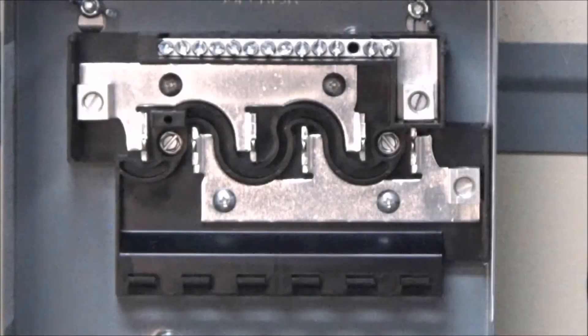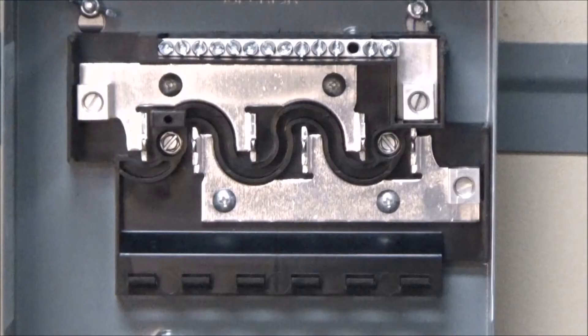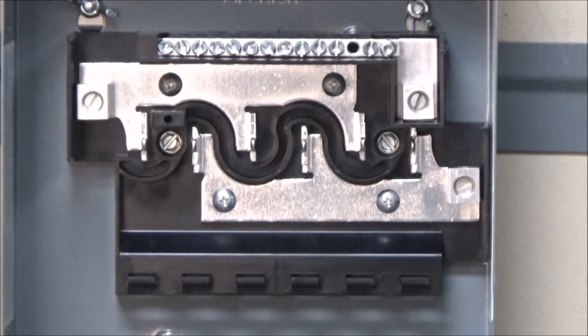In this video, we will be showing you how to install the PK-SB1-HOMBF service barrier kit used in the small six and four space home line load centers.